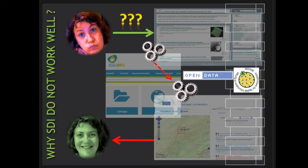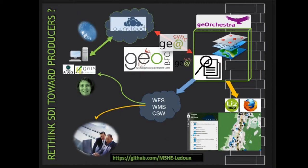Therefore, it was time for us to redesign the structure of our SDI to meet the needs of the researcher who produces spatial data — and by extension, 3D data. On this basis, within our geomatic platform GOBFC, common to the Maison des sciences de l'Homme de Besançon and de Dijon, we developed a new conceptual schema for organizing and sharing spatial information, with the researcher as a data producer in mind.